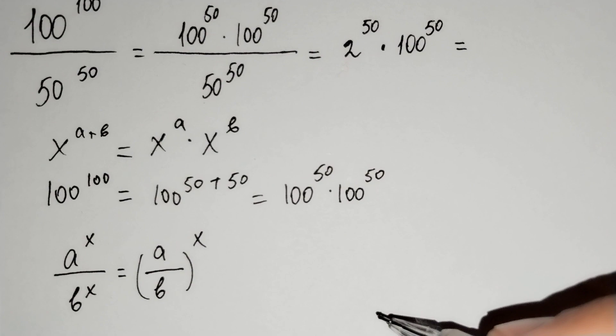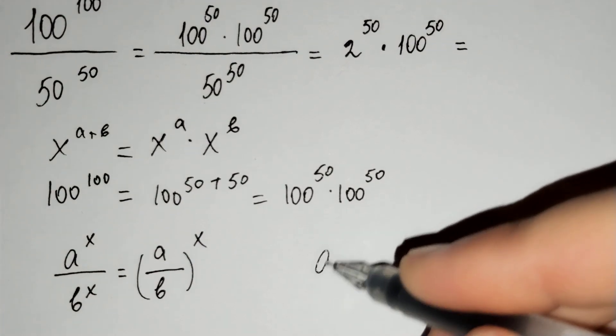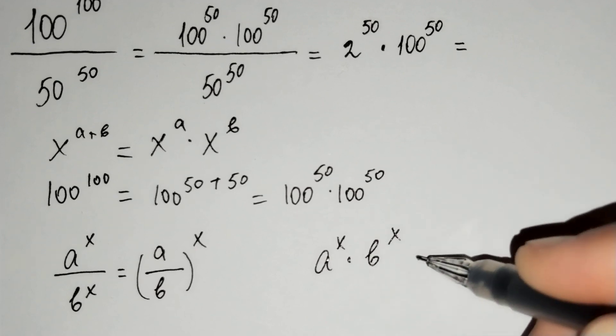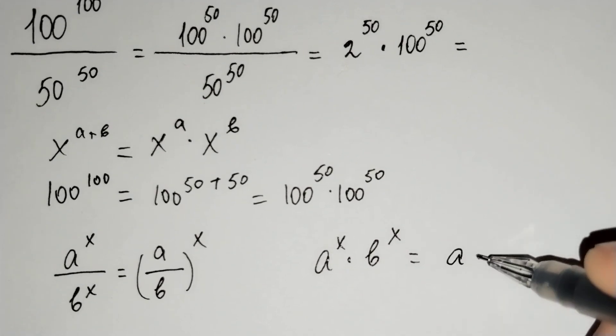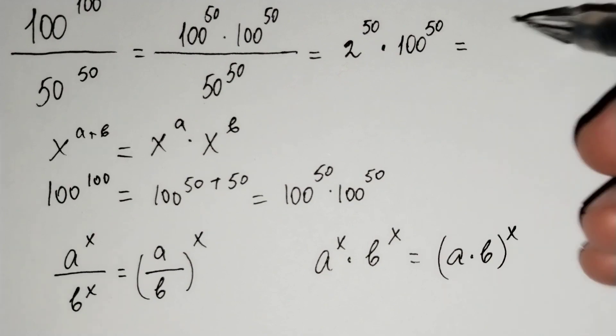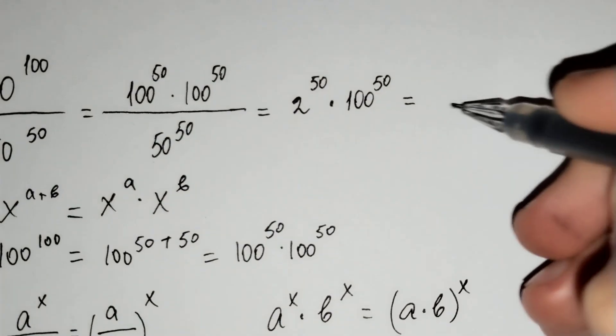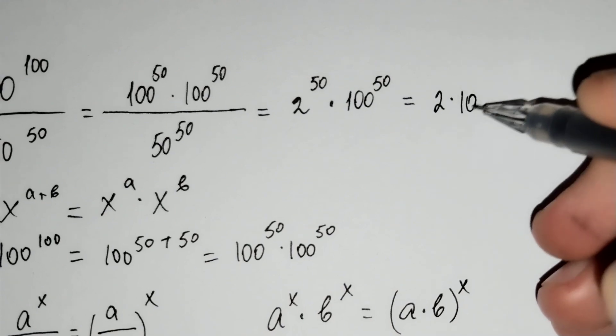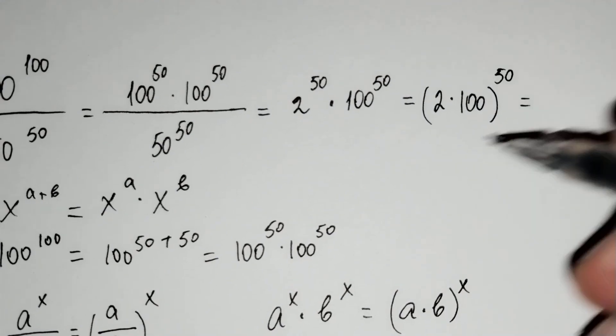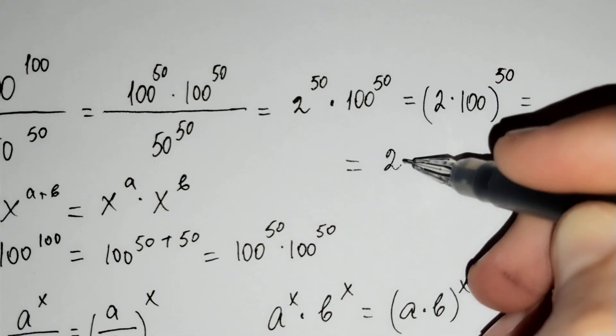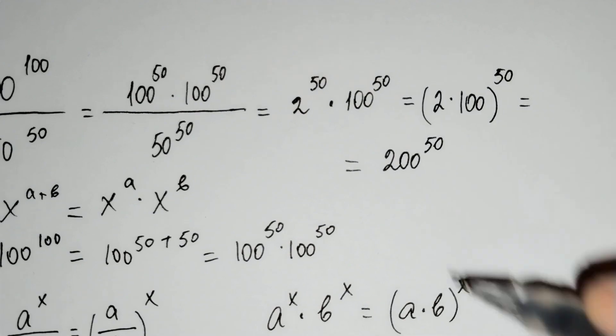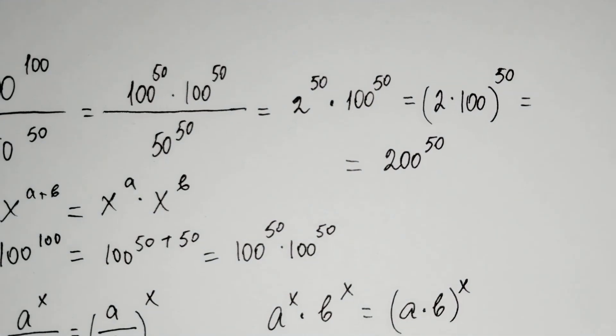And the last one you should know that a power x times b power x equals to a times b power x. And here 2 times 100 power 50. And it does 200 power 50 is our answer.